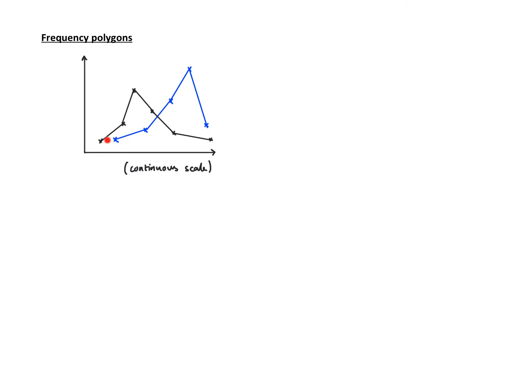The distinct features I've drawn in these two frequency polygons: the blue one clearly comes up higher here — that's the highest point — and this is the highest point for the black one. You can also see that the blue one has a negative skew, and the black one has a positive skew.